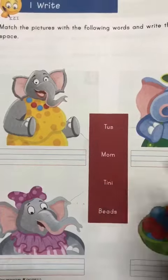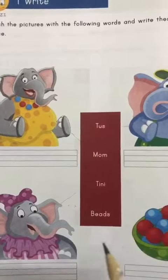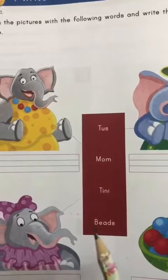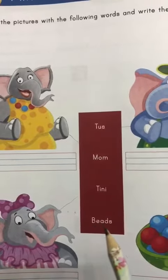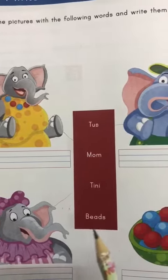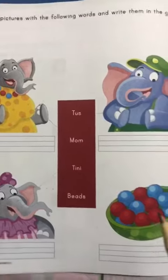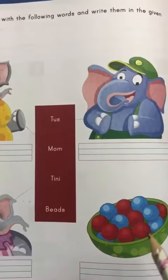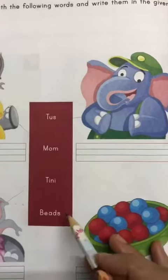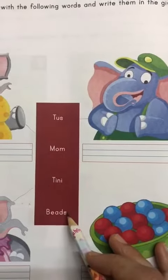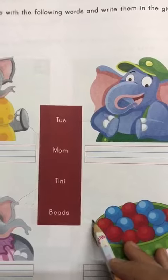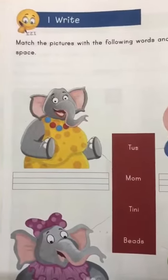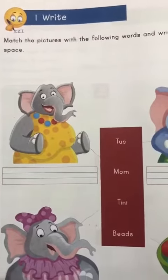Let's read the last word. Beads. Where are the beads? Here is a bowl of beads. So let's match this with this. Now we have to move on to the second part.